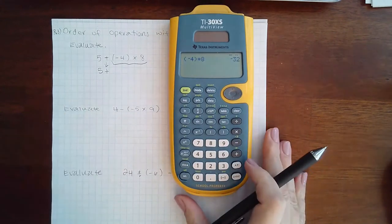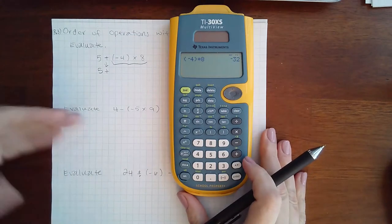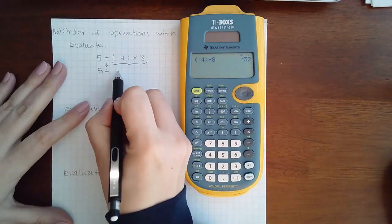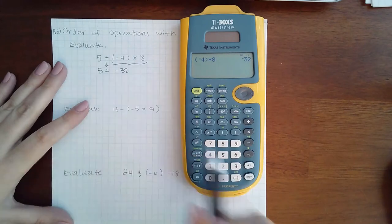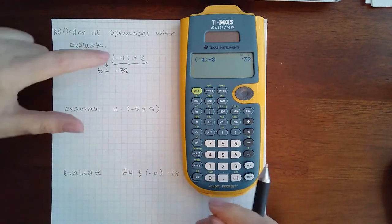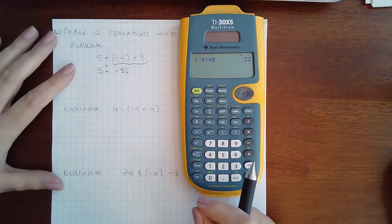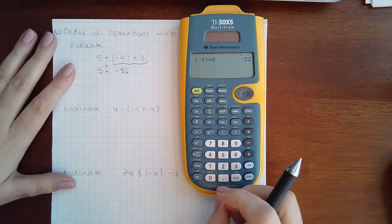As long as you type exactly what's on your paper in your calculator, you should be able to come up with these answers relatively easily. If you multiply negative 4 times positive 8 in your head, you still should end up with negative 32.